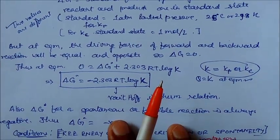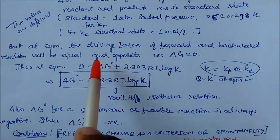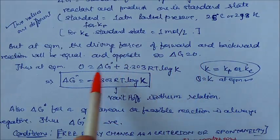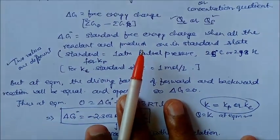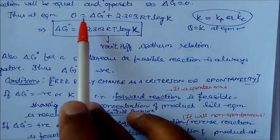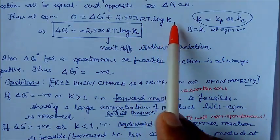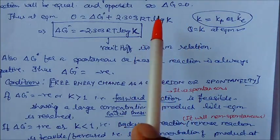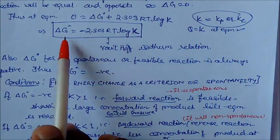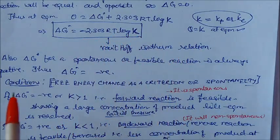At equilibrium, the driving forces for forward and backward reactions are equal and opposite, so delta G equals zero. Setting delta G to zero in the van't Hoff isotherm gives: 0 = delta G° + 2.303RT log K. Therefore, delta G° = −2.303RT log K, where Q becomes K (either Kp or Kc) at equilibrium.